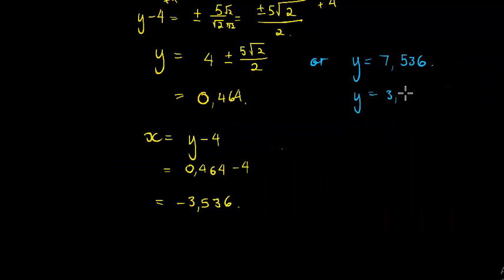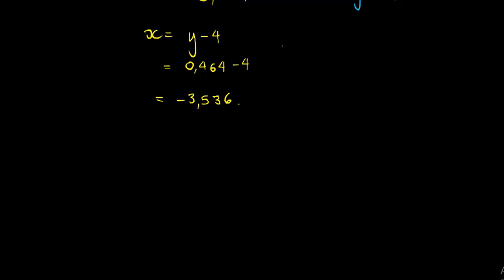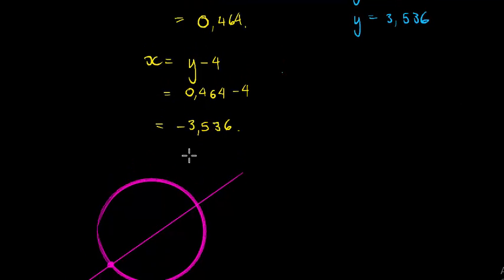Let's quickly do the solution. So we've got a circle and we've got a line cutting the circle. The one coordinate of this intersection must be (0.464, -3.536). That's the y value here, so the x value is -3.536.